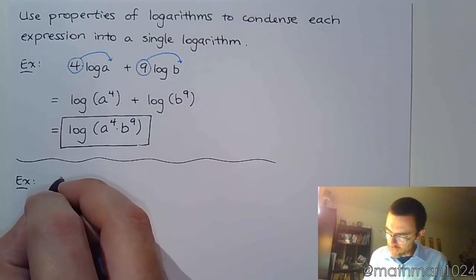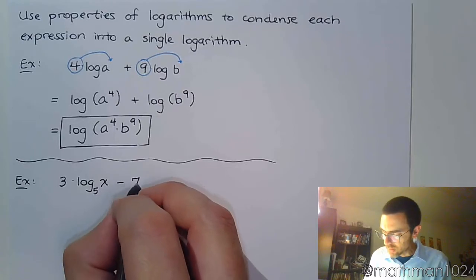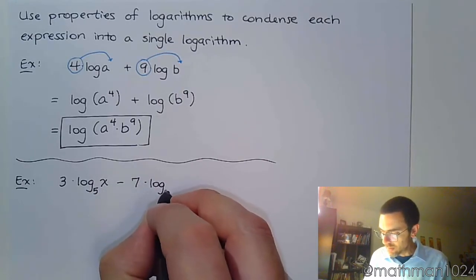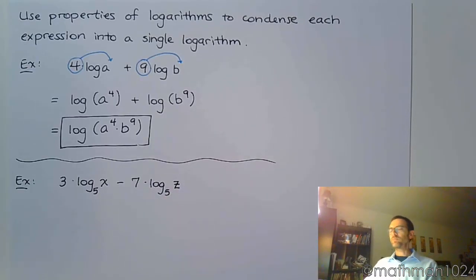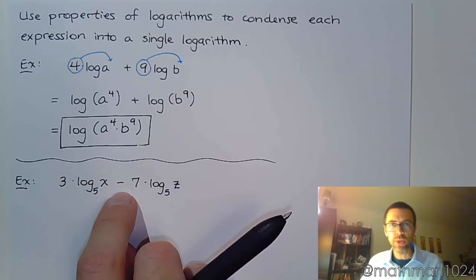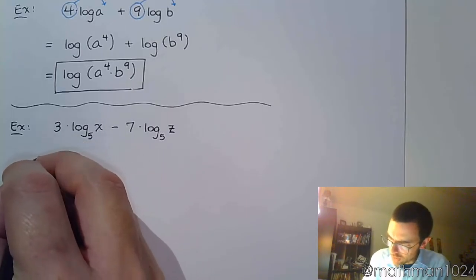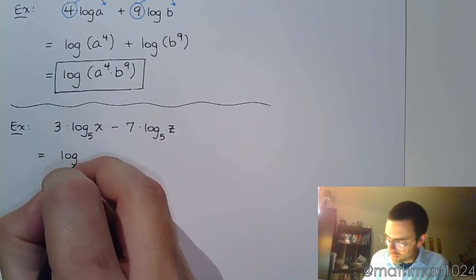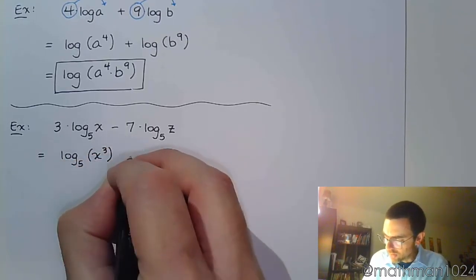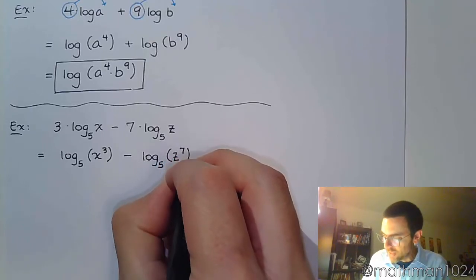Let's try this. If I do 3 times log base 5 of x minus 7 times log base 5 of z. In the last video, I talked about how any factor in the denominator would lead to a negative coefficient when you expanded the logarithm. Well, now that I see a negative right here, that tells me this z factor is going to be in the denominator. First, you want to put those powers back inside. So that's log base 5 of x to the 3rd minus log base 5 of z to the 7th.